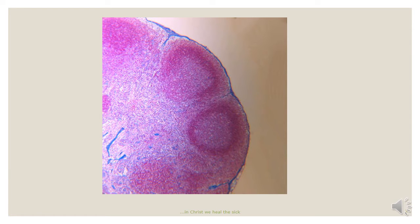We begin with the slide of the lymph node. The lymph node is an encapsulated lymphoid organ that is situated along the course of the lymphatic vessels. It is made of two parts: the outer part, which is highly cellular, called the cortex, and then the inner part, which is less cellular, called the medulla. The lymph node has a capsule, stained blue in this slide, with extensions called trabeculae extending from this capsule into the substance of the node.